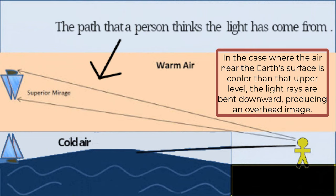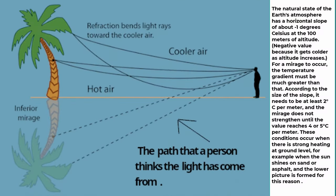In the case where the air near the Earth's surface is cooler than that upper level, the light rays are bent downward, producing an overhead image. The natural state of the Earth's atmosphere has a horizontal slope of about minus 1 degrees Celsius at the 100 meters of altitude. Negative value because it gets colder as altitude increases. For a mirage to occur, the temperature gradient must be much greater than that. According to the size of the slope, it needs to be at least 2 degrees Celsius per meter. And the mirage does not strengthen until the value reaches 4 or 5 degrees Celsius per meter. These conditions occur when there is strong heating at ground level, for example when the sun shines on sand or asphalt, and the lower picture is formed for this reason.